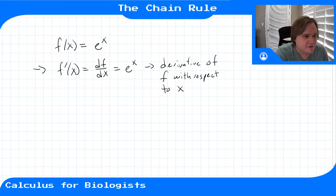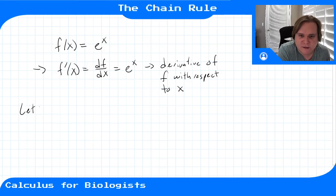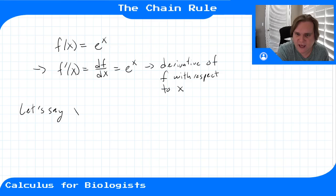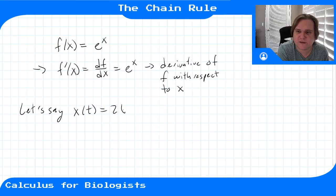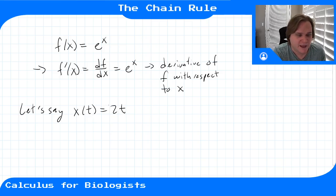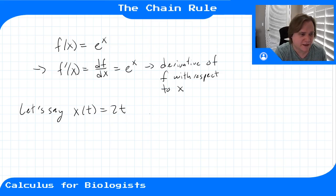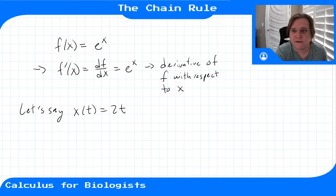But let's say that x is actually its own function. Let's say x of t equals 2t, so x isn't just x — it's actually a function of time, and that function of time is 2 times t.